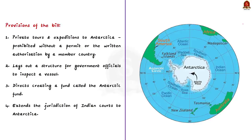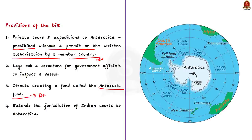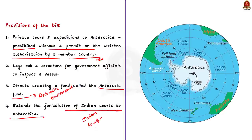Coming back to the important provisions of the Antarctic Bill: private tours and expeditions to Antarctica would be prohibited without a permit or written authorization by a member country — that is, one of the 54 signatories of the treaty. The bill also lays out a structure for government officials to inspect vessels and conduct checks of research facilities. The treaty also directs the creation of an Antarctic Fund to be used for protecting the Antarctic environment. Additionally, the bill extends the jurisdiction of Indian courts to Antarctica, laying out penal provisions for crimes on the continent by Indian citizens, foreign citizens part of an Indian expedition, and persons at Indian research stations.